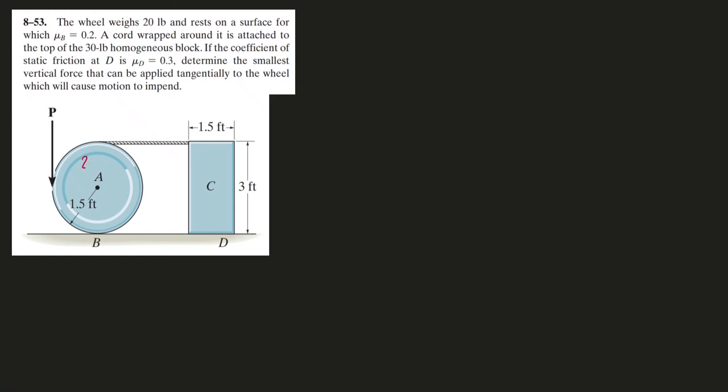In this problem we have a wheel that's 20 pounds, a block which is 30 pounds, and we are given the static friction coefficients at both points of contact. We want to determine the smallest vertical force that we can apply here which will cause motion to impend.